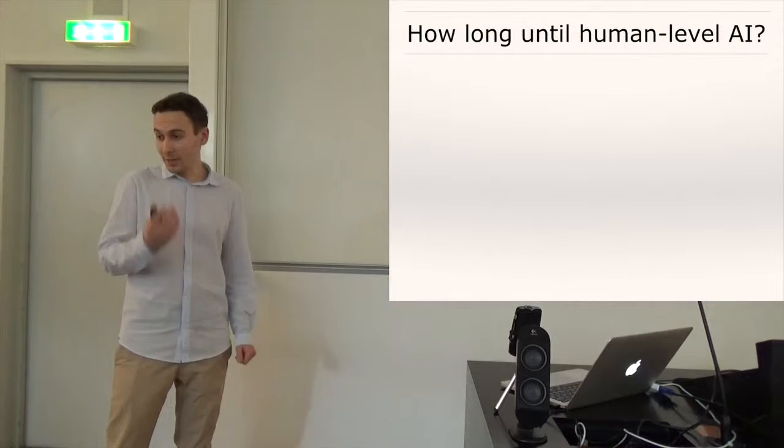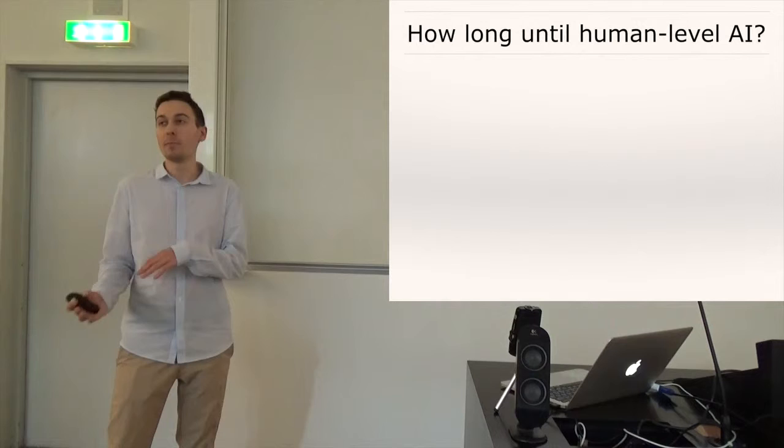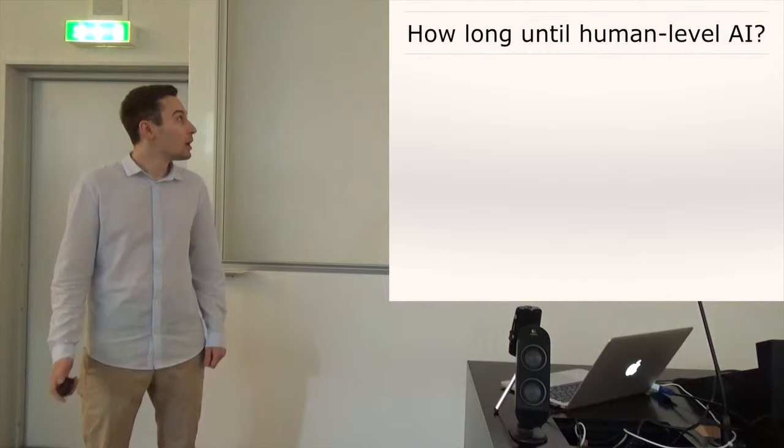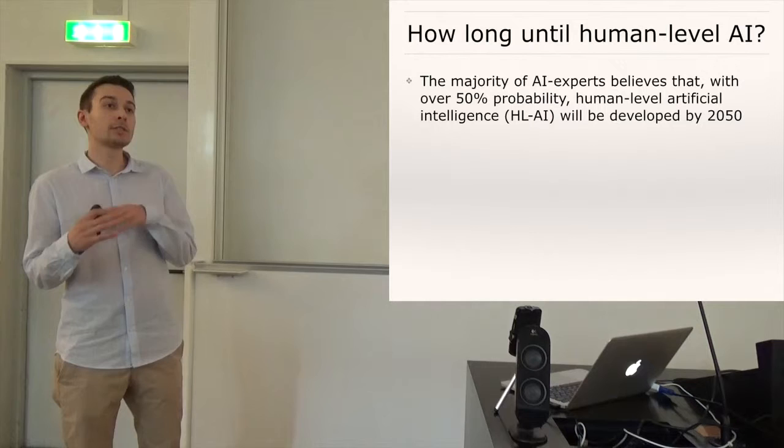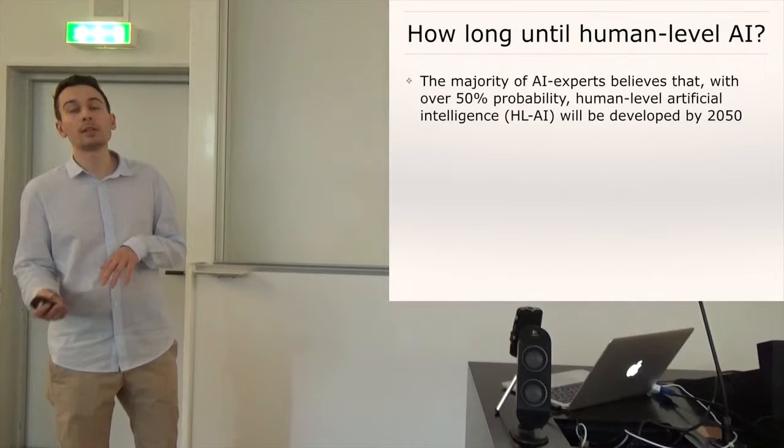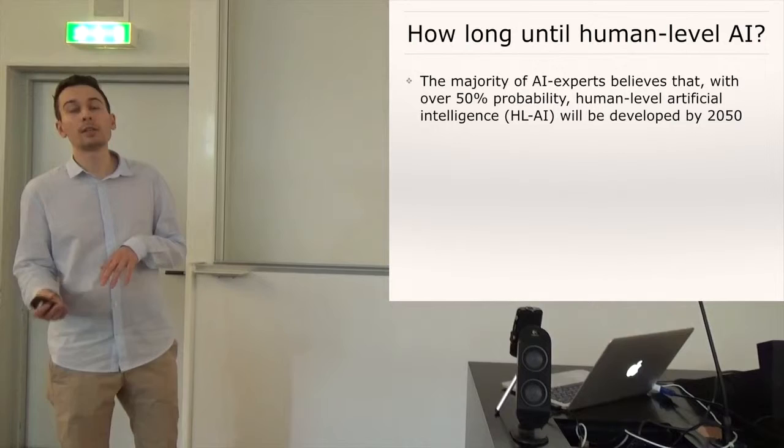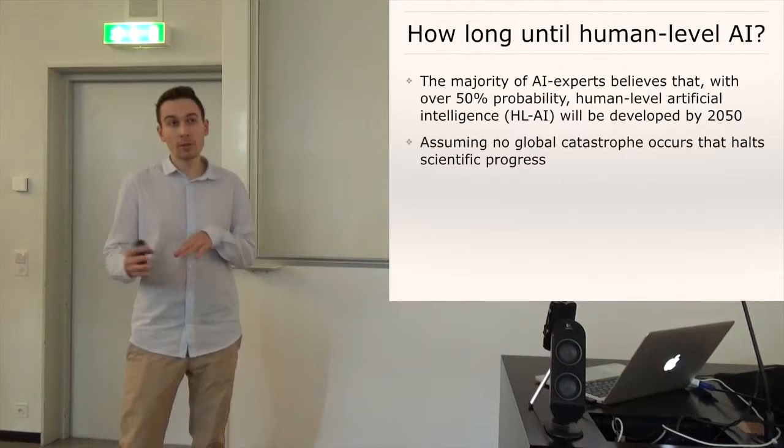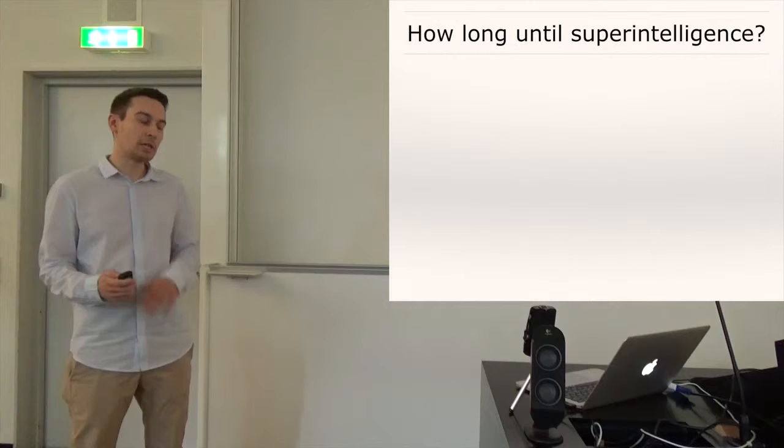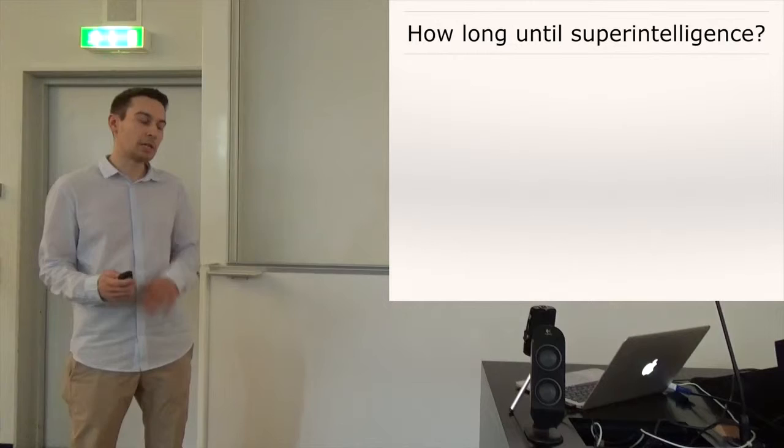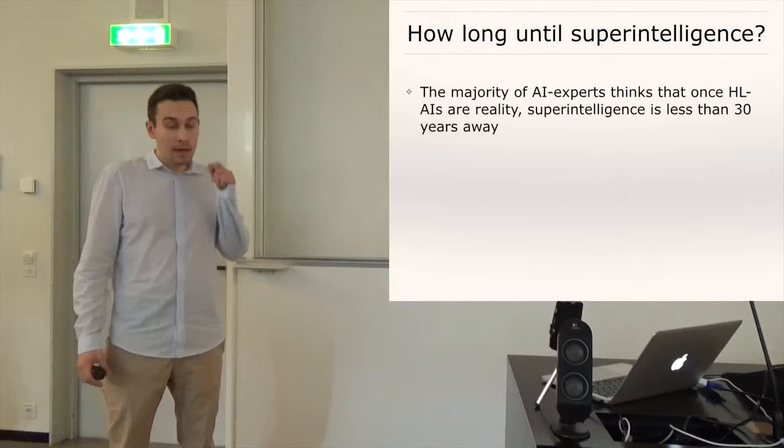So many people I think could be convinced that superintelligence is possible, but many of them just believe that it's more than I don't know 5,000 or 500 years away. But actually there has been a survey or many surveys of several groups of AI experts and if you take them all together then the majority of AI experts believe that with over 50% probability human level artificial intelligence will be developed by the year 2050. So of course this assumes that there is no global catastrophe occurs that halts scientific progress or destroys civilization.